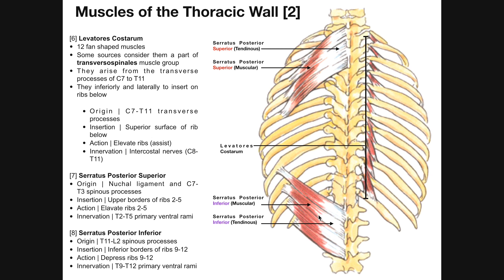The muscle down here is serratus posterior inferior, and it's very similar to the superior counterpart except the fibers, when they run, go superiorly and laterally. Its origin is on the T11 through L2 spinous processes — down here L2, L1, T12, and T11. The fibers project laterally and superiorly and insert on the inferior borders of ribs 9 through 12. If you imagine the insertion being pulled downward toward the origin, the action of this muscle is to depress ribs 9 through 12.